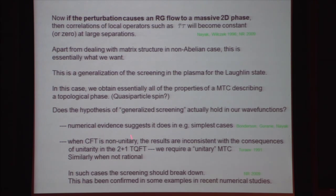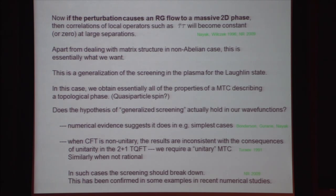In the non-unitary case, the hypothesis leads to what seem to be self-contradictory results, so the hypothesis should fail — the generalized screening breaks down. A few years ago, several papers came out nearly simultaneously from about four different groups directly studying this question in connection with non-unitary examples, concluding that screening seems to break down. In these cases, even when we have a special Hamiltonian for which the wave functions are exact zero-energy eigenstates, it seems there must not be a gap in the bulk excitation spectrum.